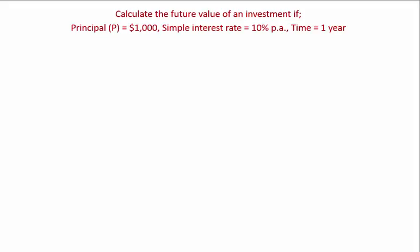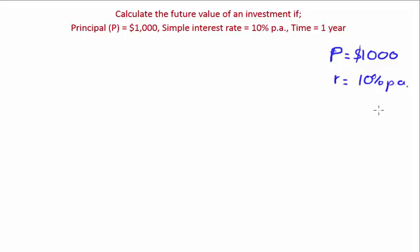Let's go through an example: calculate the future value of an investment where principal is $1,000, the simple interest rate is 10% per annum, and time is one year. Writing out the variables: P = $1,000; r = 10% per annum; T = 1 year.